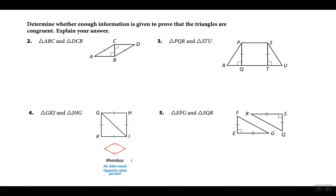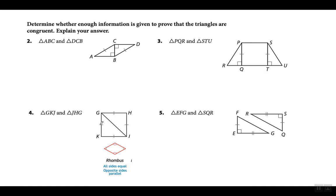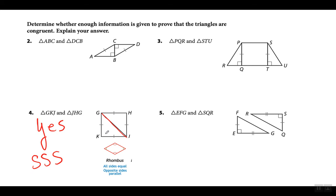With that in mind, is there enough information to determine that these two triangles are congruent? Yes, because of side-side-side — this side, this side, and this side they both have in common. So yes, there is enough information, but you cannot use the HL congruence theorem. It has to be the side-side-side triangle congruence theorem. Si hay suficiente información, pero se tiene que usar lado-lado-lado. No se puede usar HL porque no se sabe si este ángulo mide 90 grados — ese teorema solamente aplica a triángulos de 90 grados.